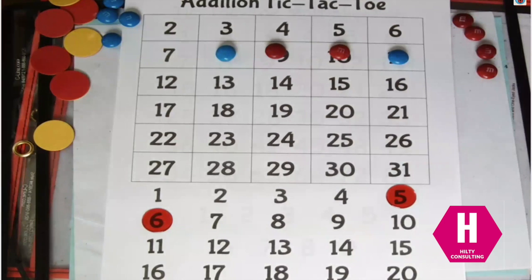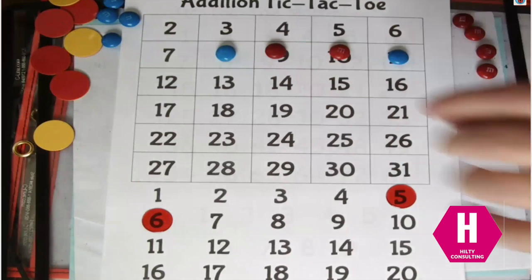Brett's turn and he gets to move either the five or the six. It's up to him. He's thinking hard.